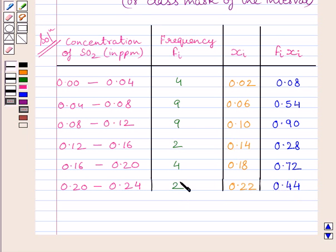Now, we will find out summation fi. Summation fi is equal to sum of all these frequencies. It is equal to 30. And summation fi×xi is equal to sum of all these products. So, it is equal to 2.96.